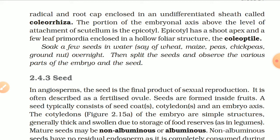Soak a few seeds of wheat, maize, peas, chickpeas, and groundnut overnight. Then split the seeds and observe the various parts of the embryo and the seed.